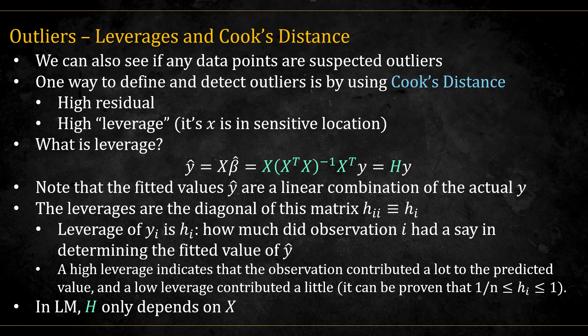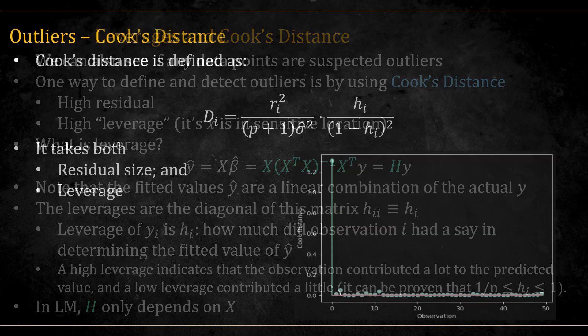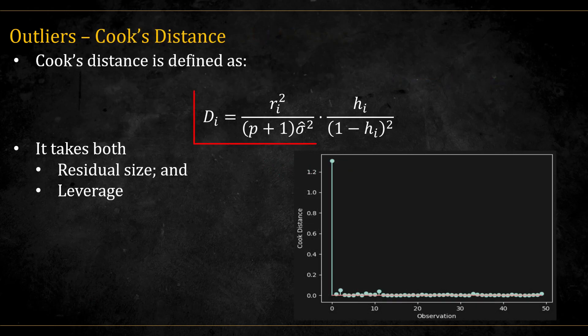In regular linear models, H only depends on X, but this is not true for GLMs. Cook's distance is defined to be this quantity over here. We can see that it incorporates both the residuals, corrected for the number of coefficients and for the variance, and it also incorporates the leverage, giving a higher value to higher leverages.